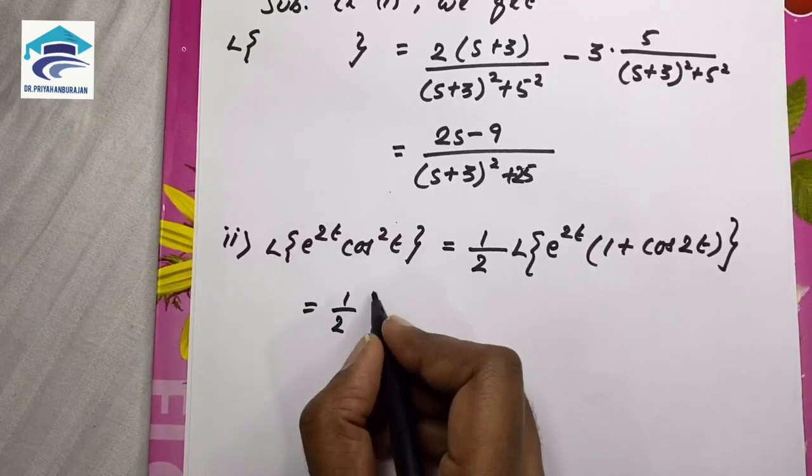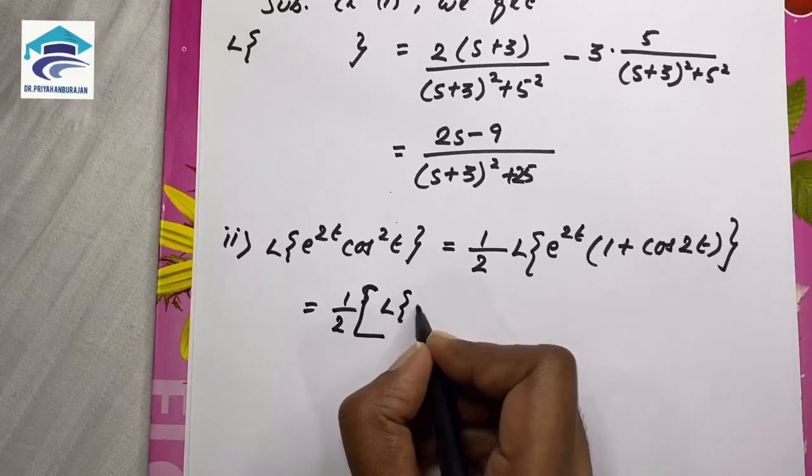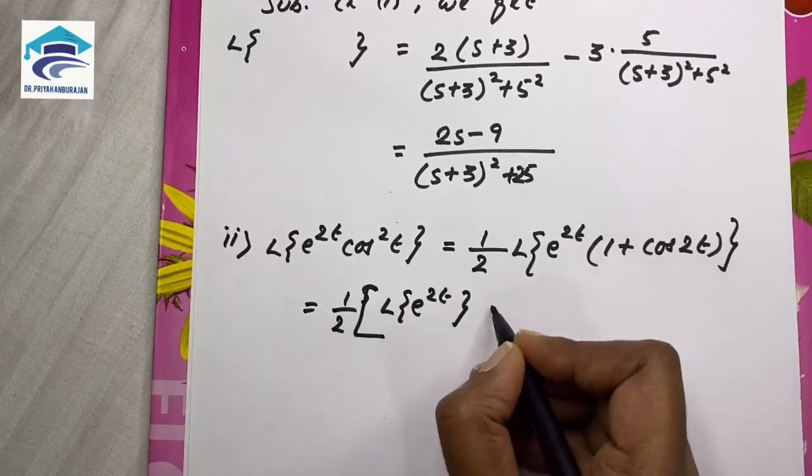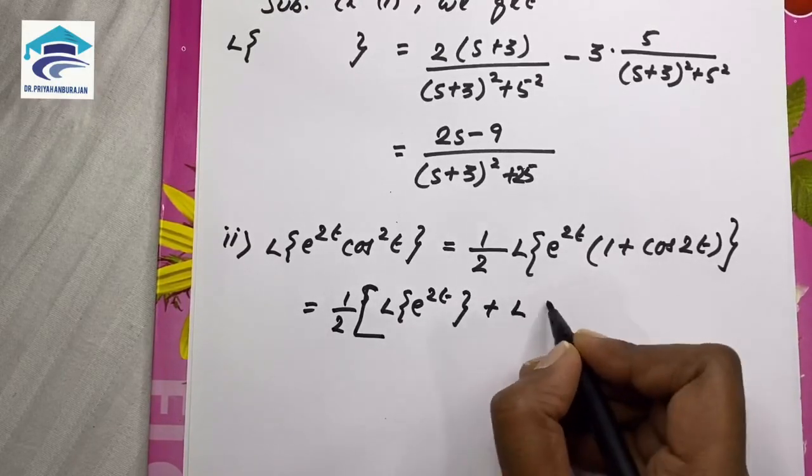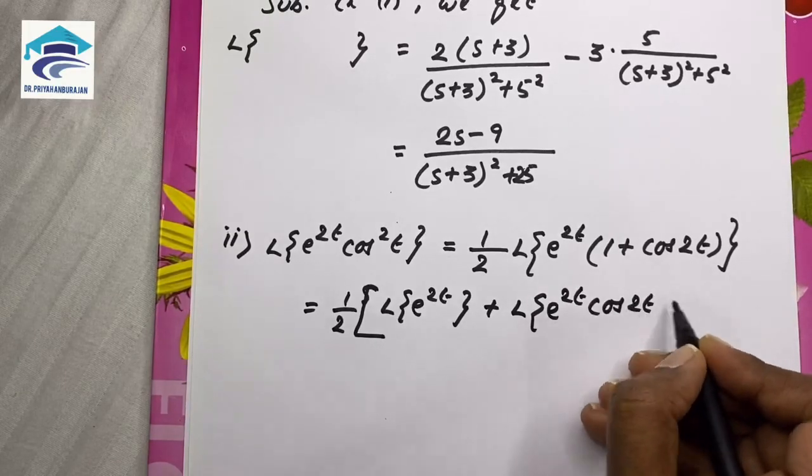We have two terms here. This is 1 by 2 into L of e power 2t plus L of e power 2t cos 2t.